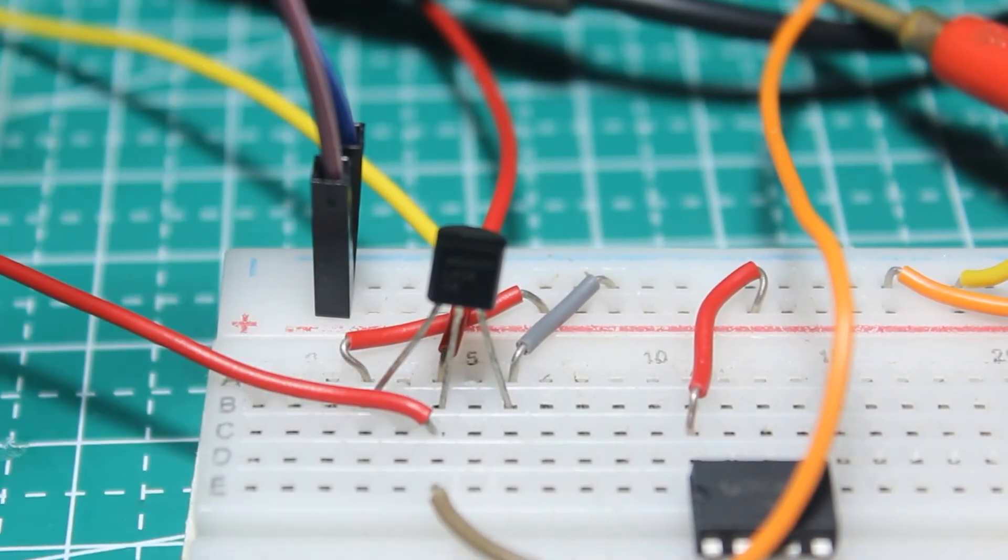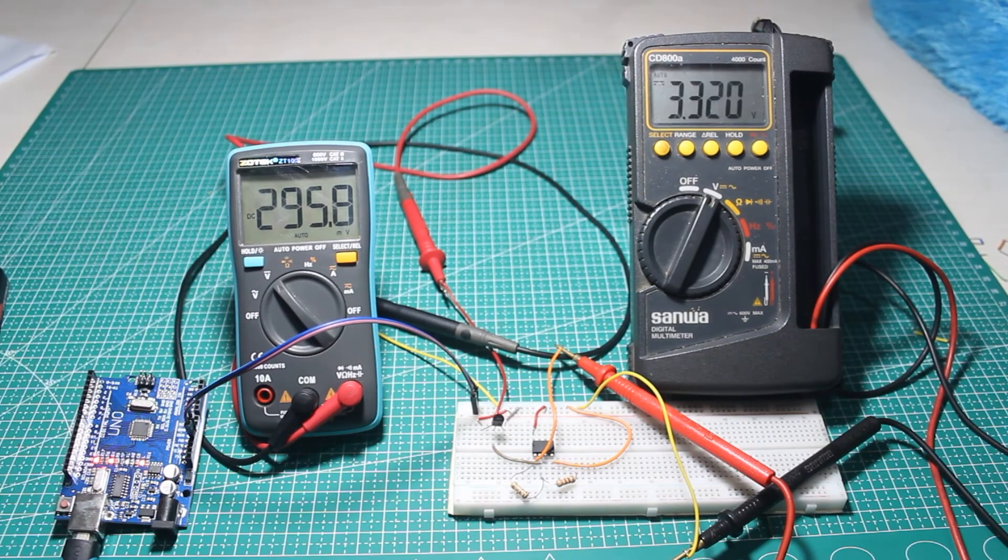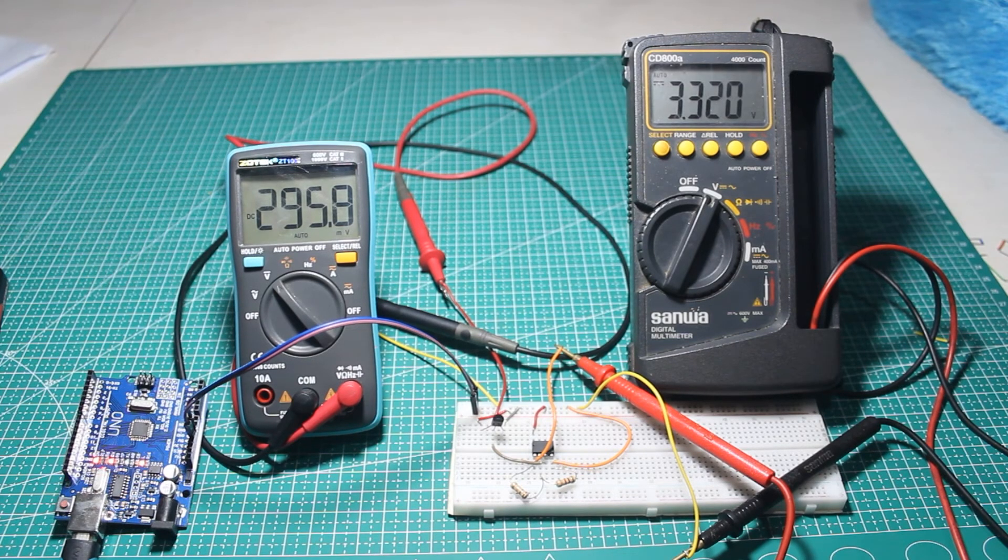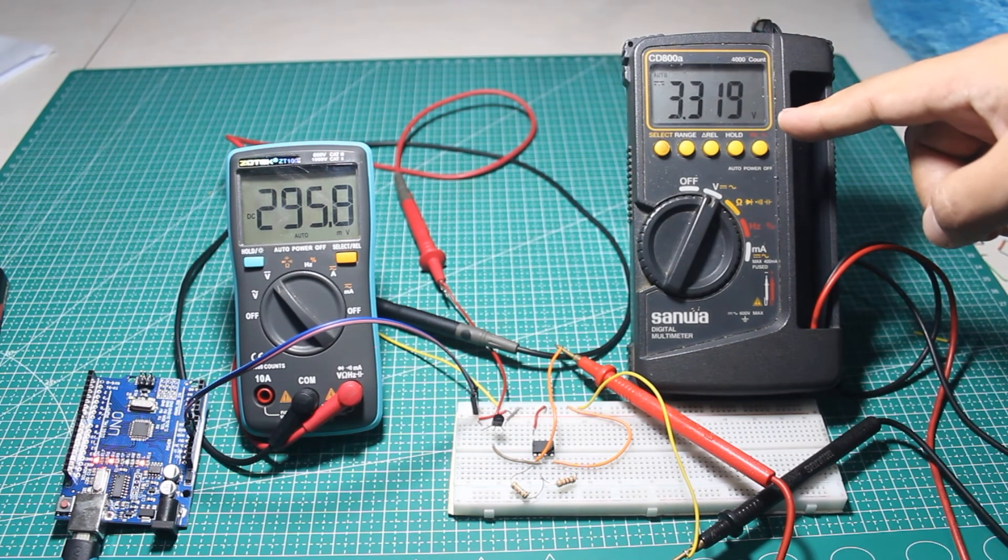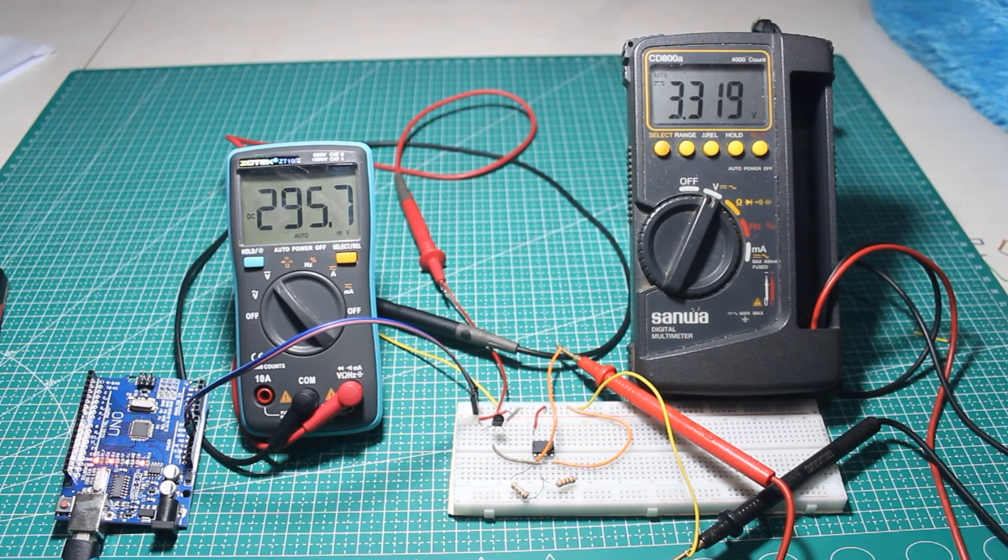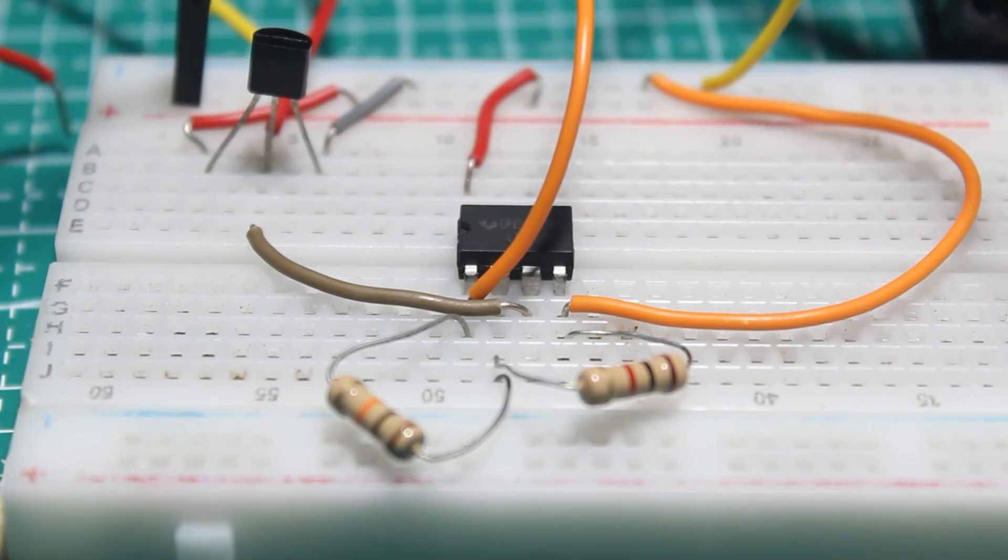After the wiring is done, let's measure it. The original voltage from the LM35 is about 290 millivolts, as we see on the left multimeter. Because the temperature here is about 29 degrees Celsius, the multimeter on the right is the output. We have the expected result too - it is about 11 times the input. The accuracy is also affected by the resistor's tolerance value.